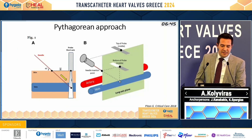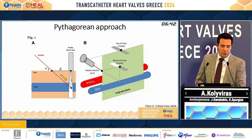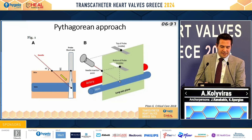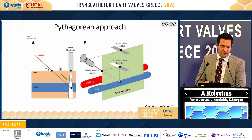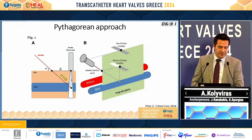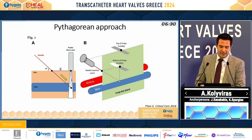Another advice is to use the Pythagorean approach. We have to avoid starting our puncture too close to the probe, and keep the same distance as the depth at 45 degrees.